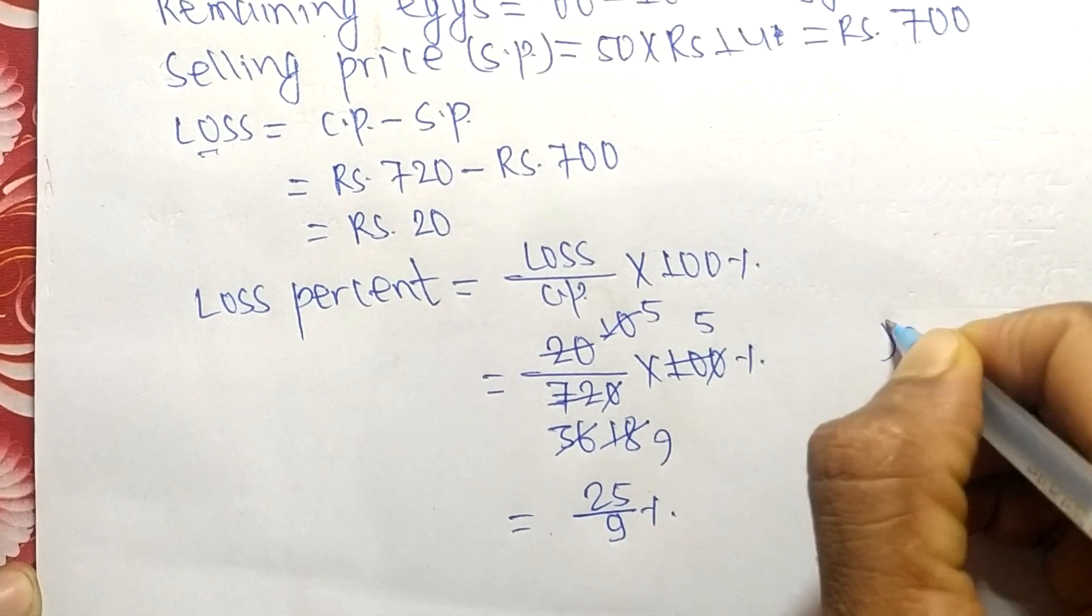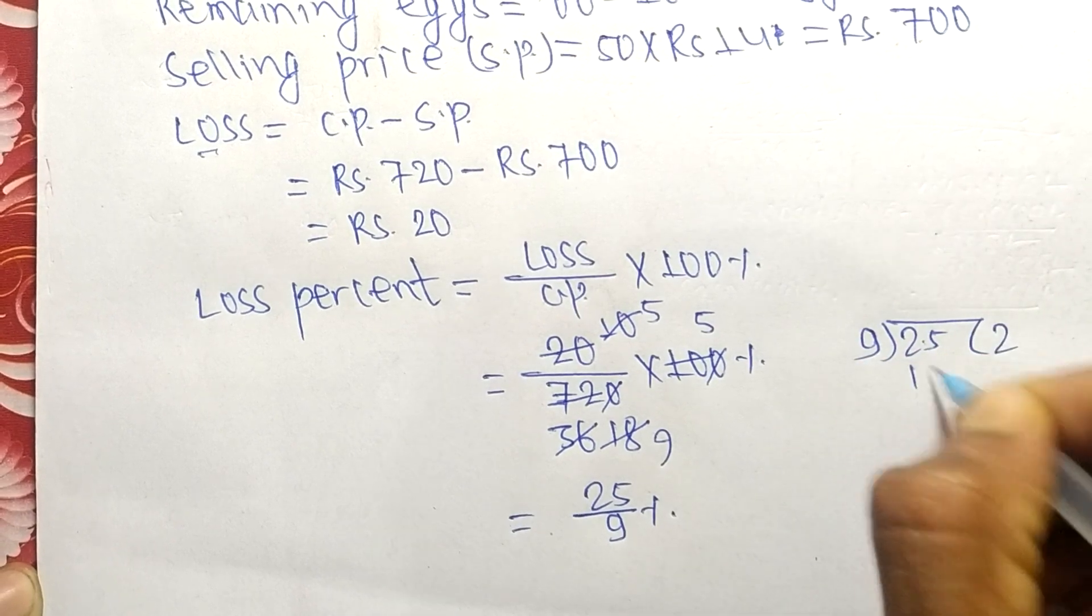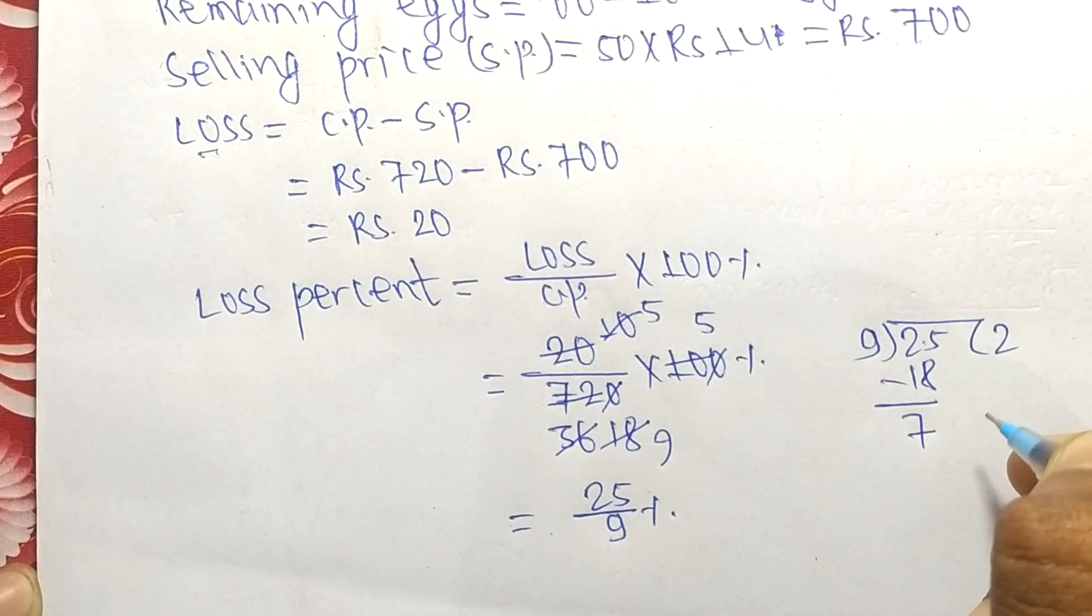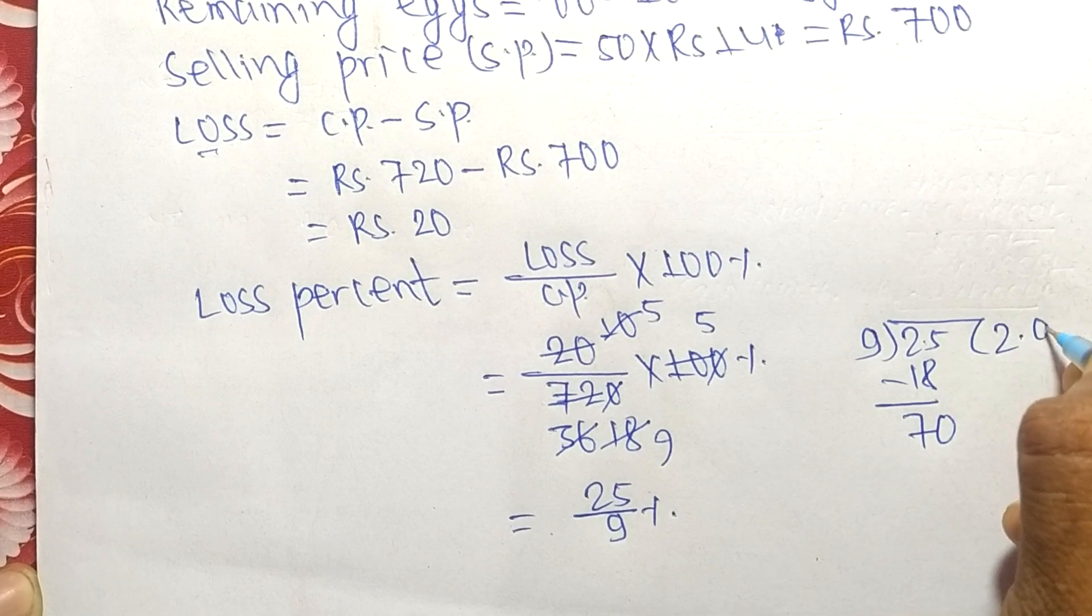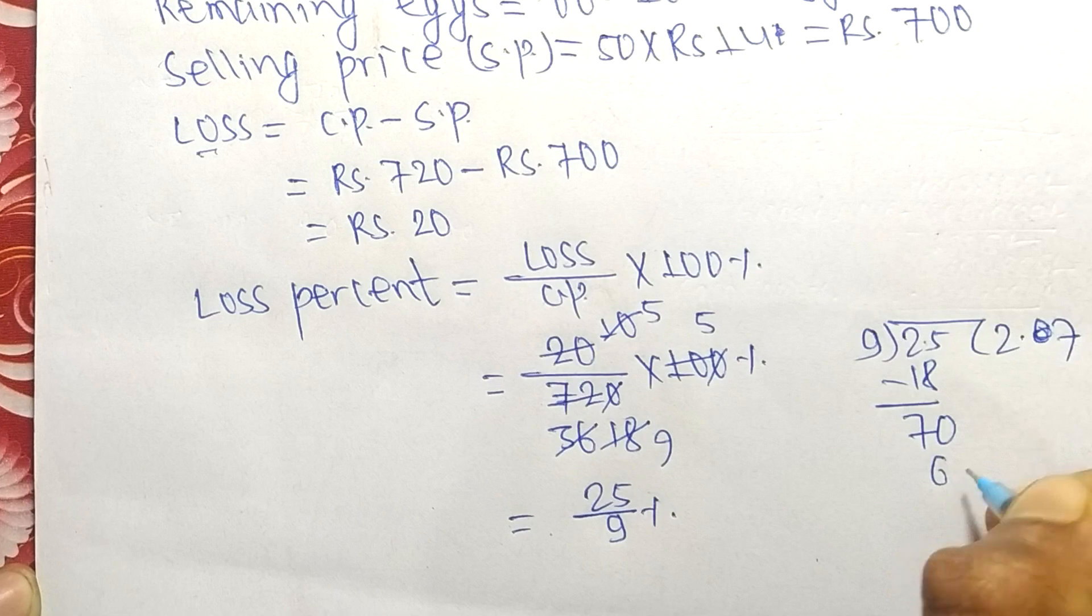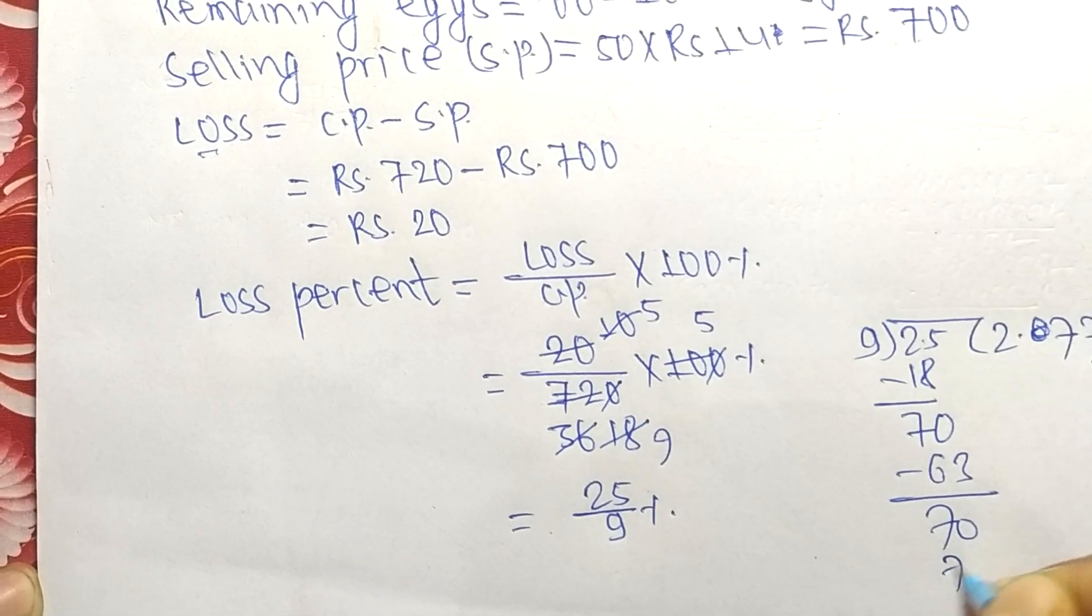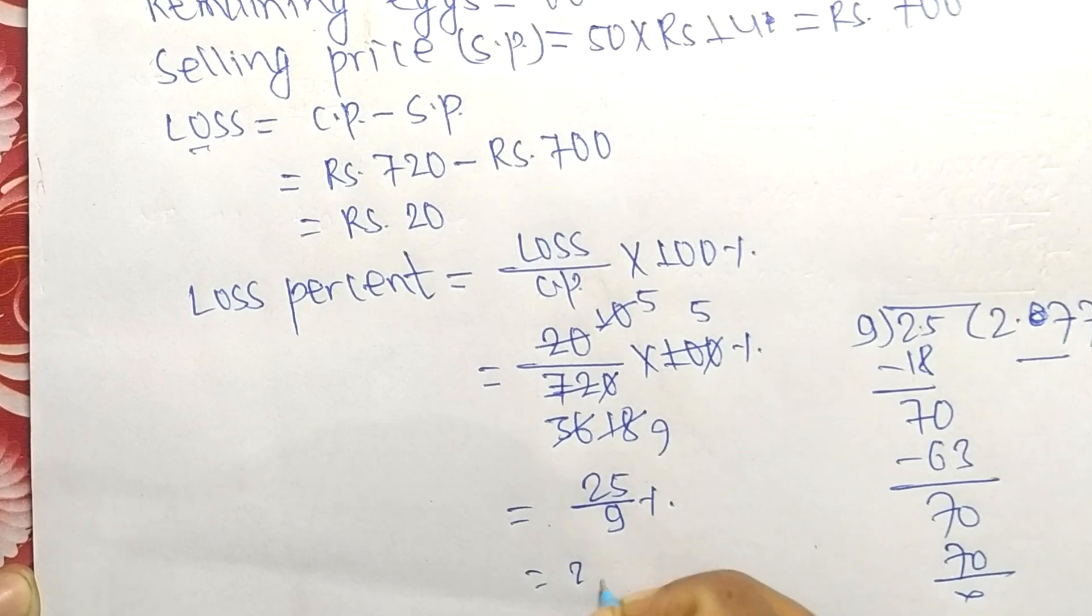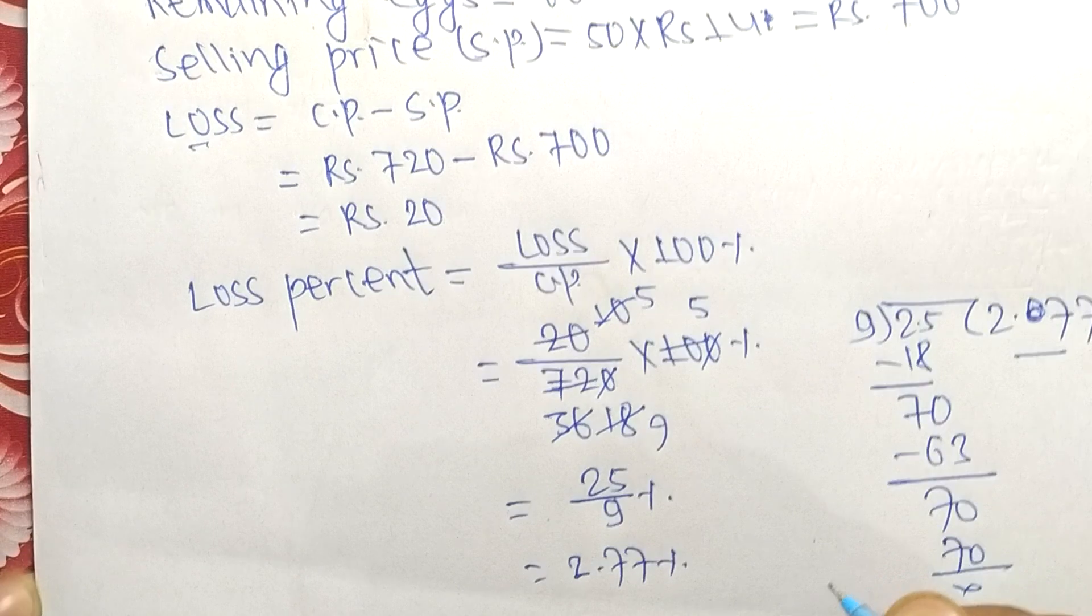In decimal form, 25 divided by 9: 9 times 2 = 18, 7.0, 9 times 7 = 63, again 7, so it continues as 2.77 percent.